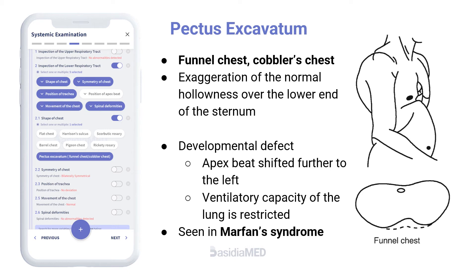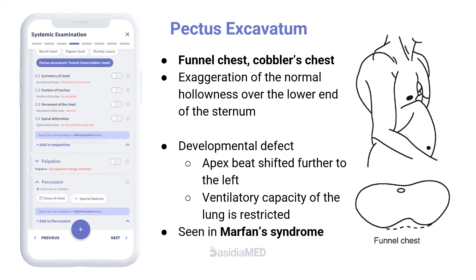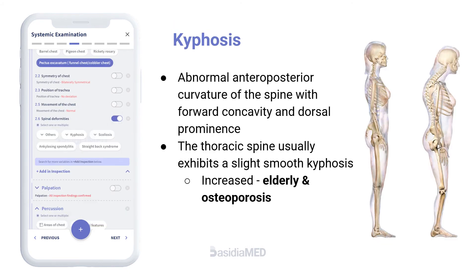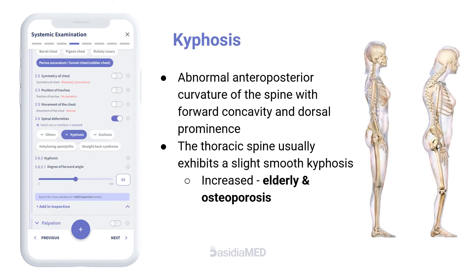Spinal deformities. Kyphosis is an abnormal anteroposterior curvature of the spine with forward concavity and dorsal prominence. The thoracic spine usually exhibits a slight smooth kyphosis, which increases in the elderly and especially in osteoporosis.